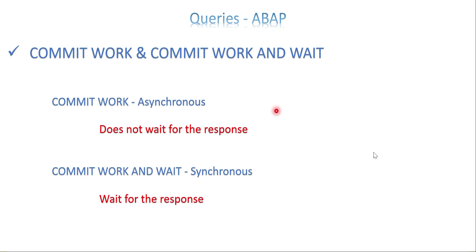It depends on the business process and the way you are developing your project. Based on that, you have to choose whether the process should be asynchronous or synchronous. If asynchronous works for your project, you can use commit work — it won't wait for the response and keeps moving on. Commit work and wait is synchronous — it waits for the response, and once the update is done, only then it proceeds to the next statement.